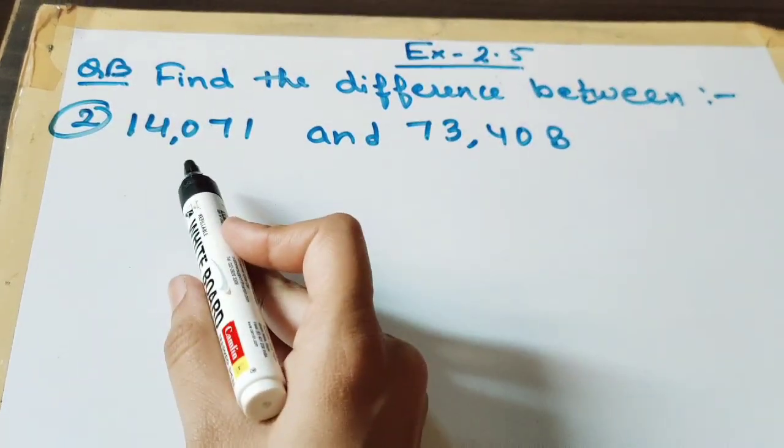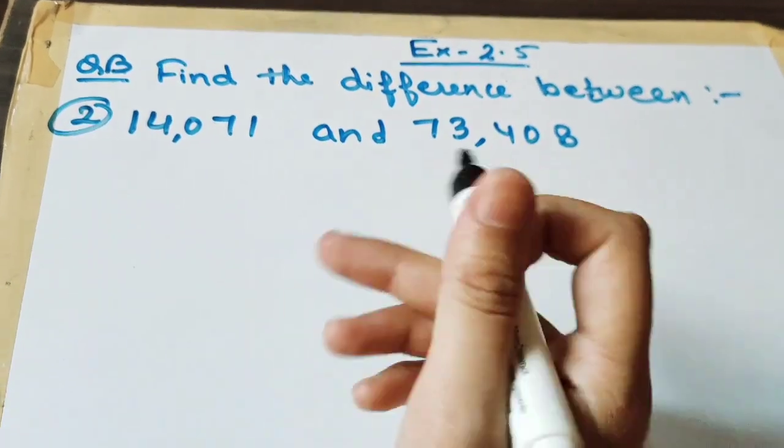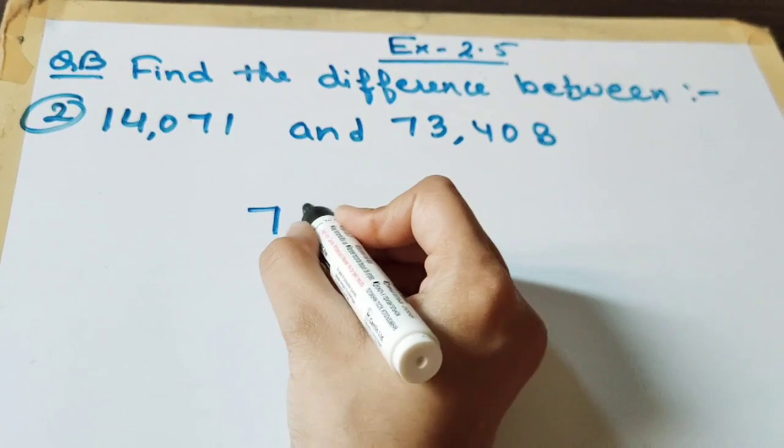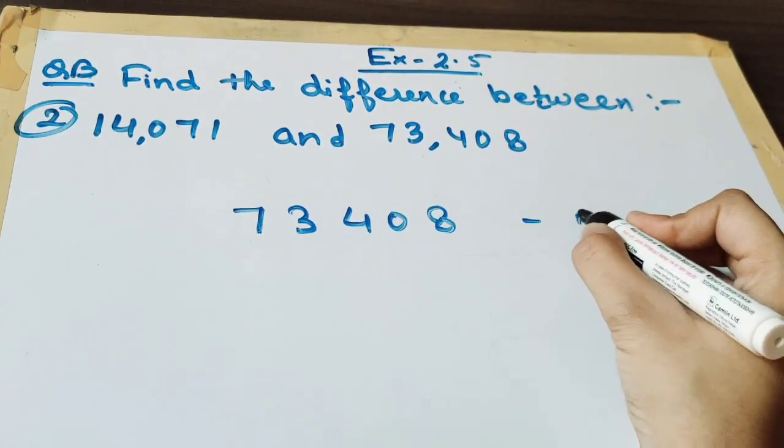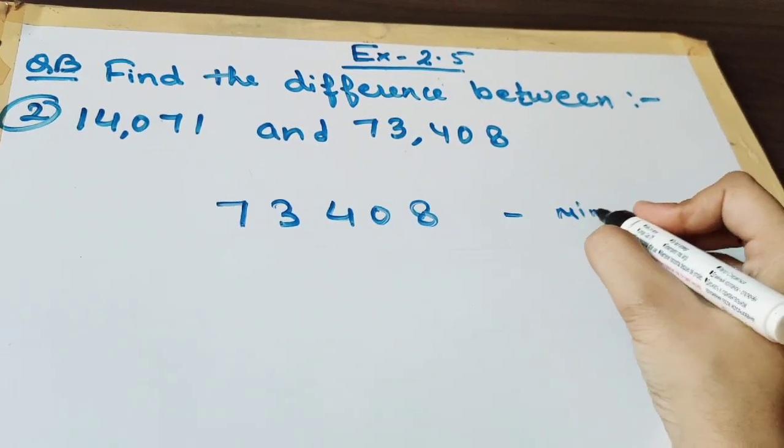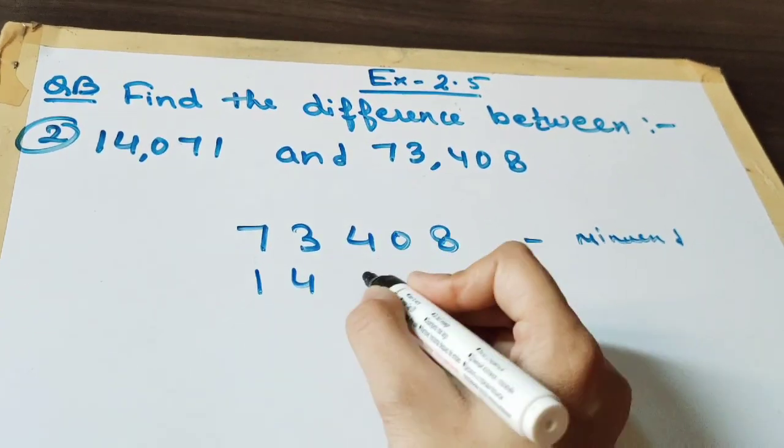Remember that whenever you are subtracting the larger number or the bigger number will be the minuend. So we will write 73,408. As a, this will be minuend.